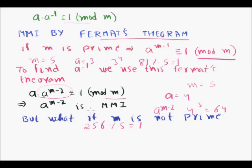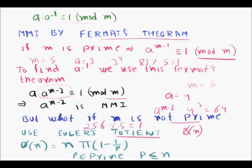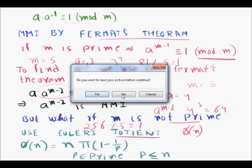Fermat's theorem works when m is prime, but m might not always be prime. In that case, we use Euler's totient function, denoted φ(n). It is defined as n × ∏(1 − 1/p) over all prime factors p of n, where p are all prime numbers in the prime factorization of n.